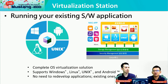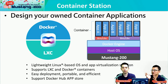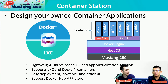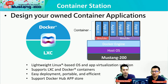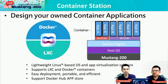The next one is the container station. A container is a lightweight Linux-based OS. Running a container, you don't need to create different operating systems — that's why we call it a lightweight Linux-based OS. It is easy to deploy, portable, and efficient. The container station also supports Docker Hub App Store, so you can download applications from there and design your own container running on Mustang 200.